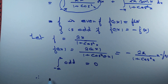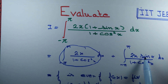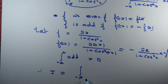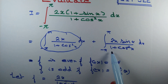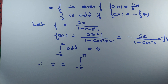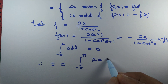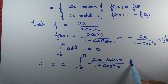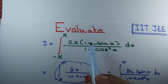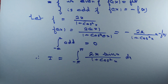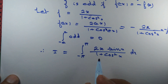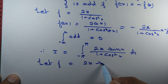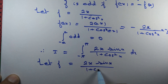Therefore, since the first integral is 0, we are left with only the second one. So I equals the integral from minus pi to pi of 2x sin x divided by (1 + cos squared x) dx. So we have simplified a bit — we have removed the first quantity. Now let's take f equal to 2x sin x divided by (1 + cos squared x) and check if it is even or odd.